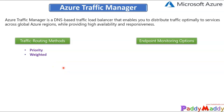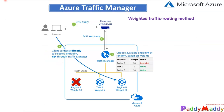Similarly, you can configure weight-based routing, which distributes traffic across a set of endpoints either evenly or according to defined weights. In the weighted traffic routing method, you assign a weight between 1 and 1000 to each endpoint. For example, with three endpoints — region A, region B, and test A — you can assign 50/50, so traffic splits evenly between region A and B.